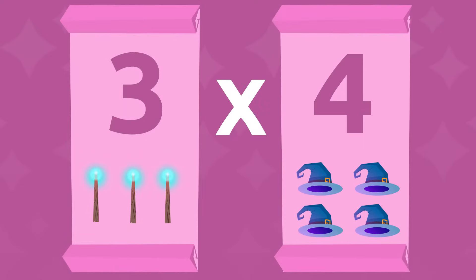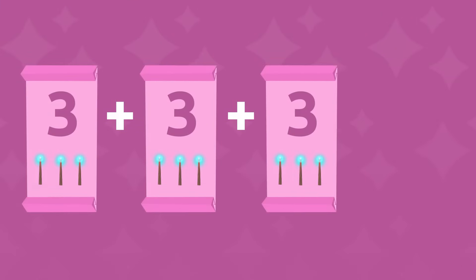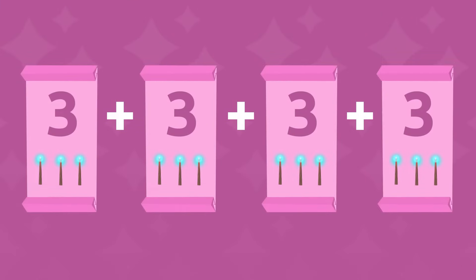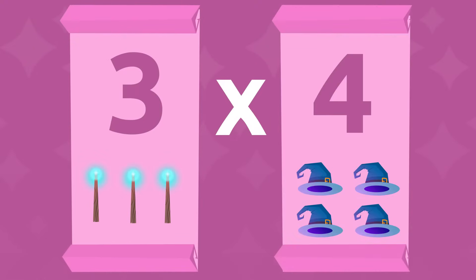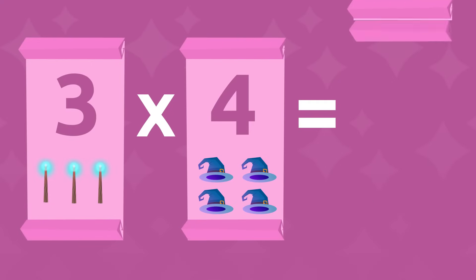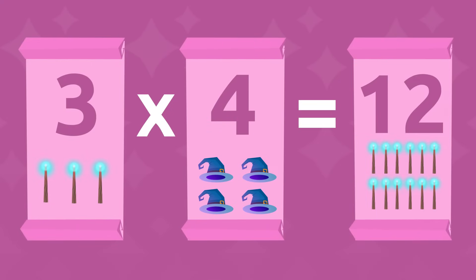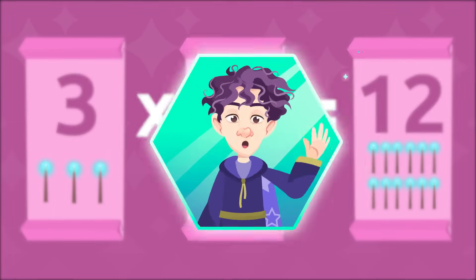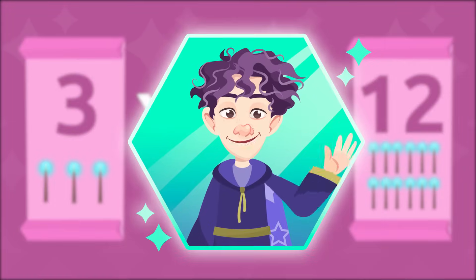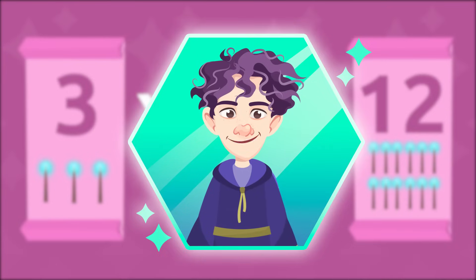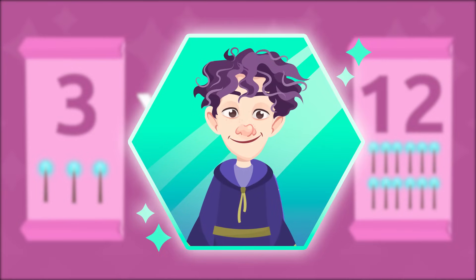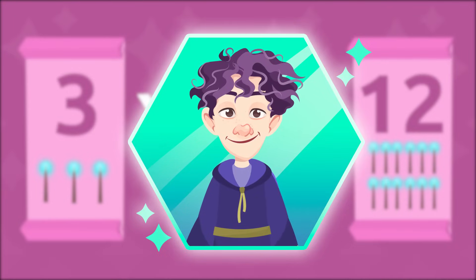We can calculate it like this: three wands plus three more wands plus three more plus three more, or three wands by four hats. Both ways will give us the same result, the number 12. So to multiply is to add up the same number several times.